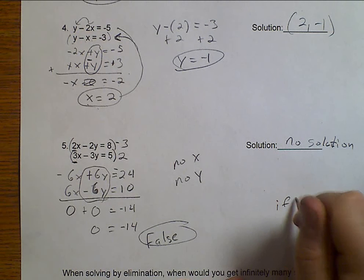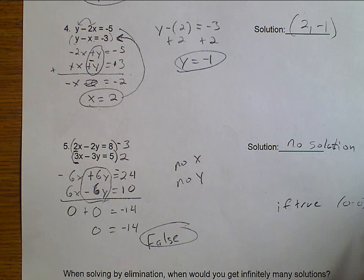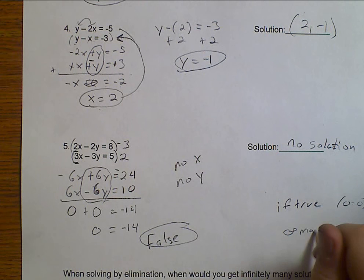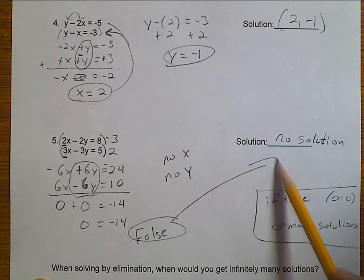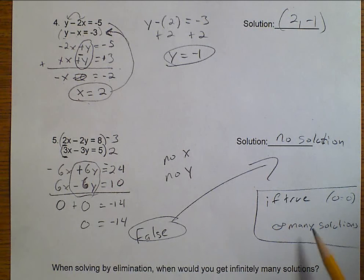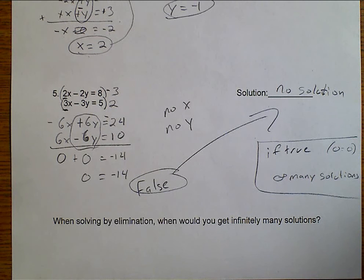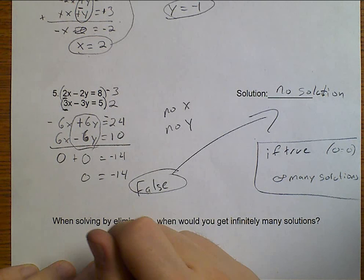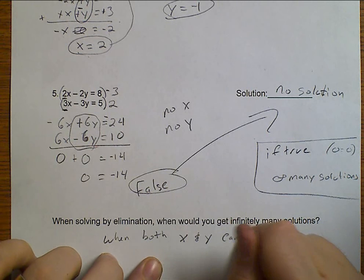Well, that is a false statement. My variables have completely disappeared. There is no more X. There is no more Y. When they've both canceled, it just doesn't work. And so, this is no solution. And that's because there is false. Now, should I have gotten a true statement? Like, have I gotten 0 equals 0? Had I gotten 0 equals 0, then it would have been infinitely many solutions.